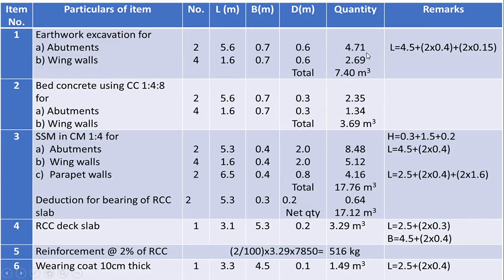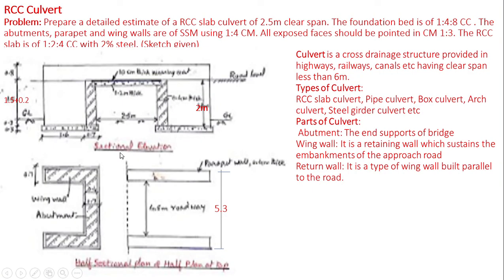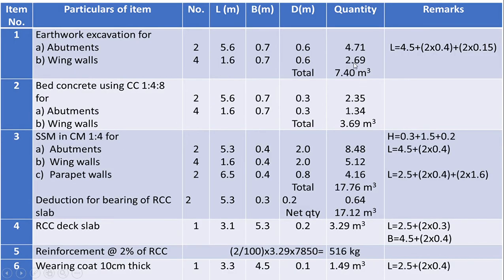Similarly, there are four wing walls, one on either side of both sides of the road. The length of wing walls, as shown in the sketch elevation, is 1.6 meters. The width and thickness of excavation for wing walls is the same as that of the abutment. Quantity for wing walls is 2.69 cubic meters. Total excavation quantity is 7.4 cubic meters.